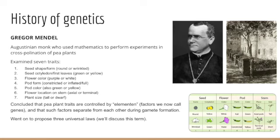He relied on math — quantitative observation — to study the patterns of inheritance of these pea plants. His work showed that traits were passed from parent to offspring in a very predictable manner. He specifically looked at seven traits: seed shape, either round or wrinkled; seed cotyledon color, yellow or green; flower color, white or purple; pod form, either full or constricted; pod color, green or yellow; and flower location on the stem, either axial near the stems or terminal at the tips.